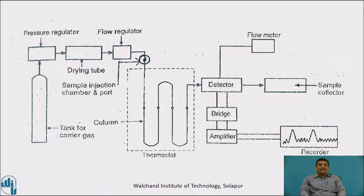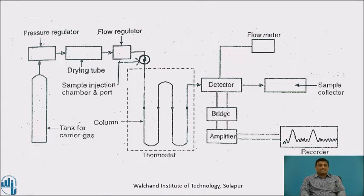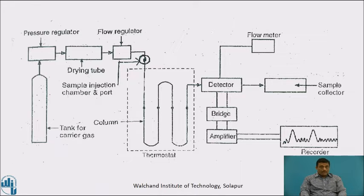The signals are detected and converted into a graph plotted on a recorder. By reading the graph, one can predict which compound is present and what the composition is, because gas chromatography is used for both qualitative and quantitative analysis of a mixture. The column is kept inside a thermostat so that during separation the sample gets heated, vaporized, and the vapors are separated in the presence of both stationary and mobile phases.